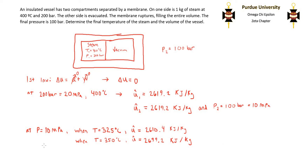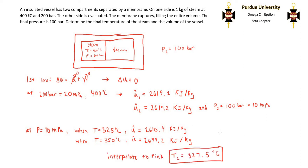Looking at the steam tables for a pressure of 10 megapascals, you'll find that when the temperature is 325 degrees, the internal energy is 2,610.4 kilojoules per kilogram, and when the temperature is 350 degrees, the internal energy is 2,699.2 kilojoules per kilogram. Our final internal energy is between these two values, so we use interpolation to find the final temperature. After interpolating, the final temperature of the system is 327.5 degrees Celsius.